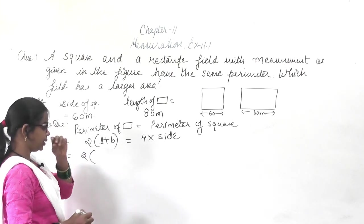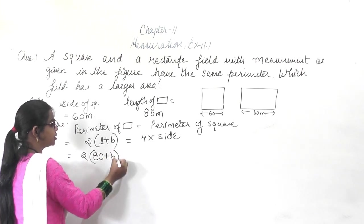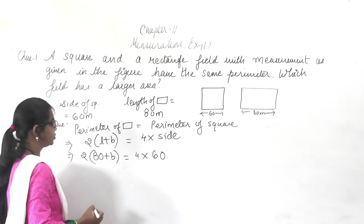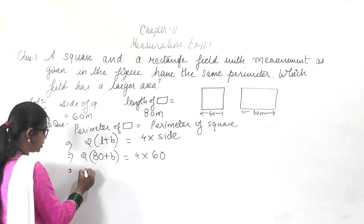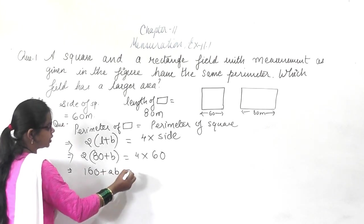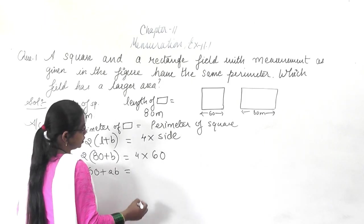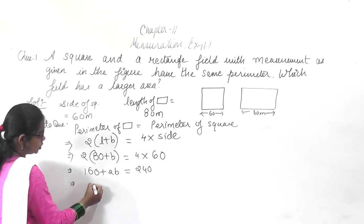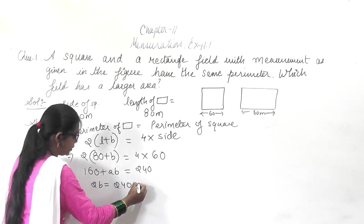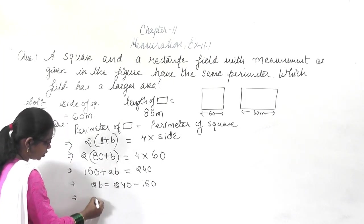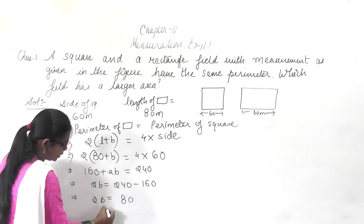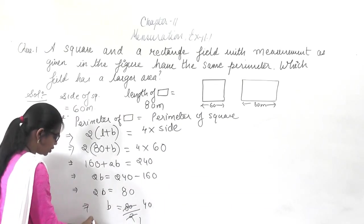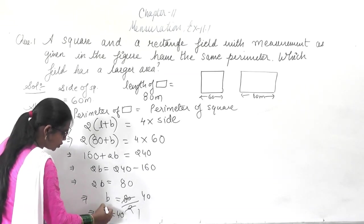You know the length of the rectangle is 80. Setting perimeters equal: 2 multiplied by (80 plus B) equals 4 into 60, which gives 160 plus 2B equals 240. From here, 2B will be equal to 80, so B equals 40. The breadth of the rectangle is 40 meters.